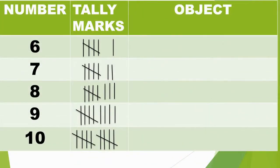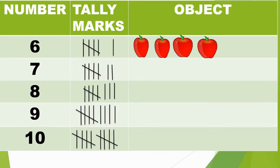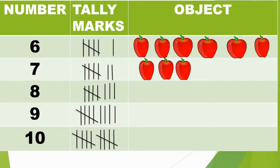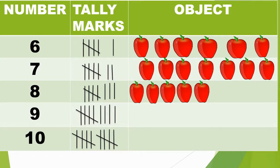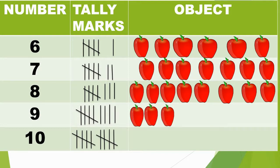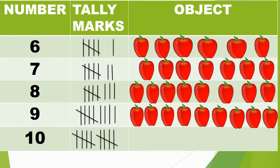Number 6 represents 6 tally marks — 6 apples. Number 7 represents 7 tally marks — 7 apples. Number 8 represents 8 tally marks — 8 apples. Number 9 represents 9 tally marks — 9 apples.